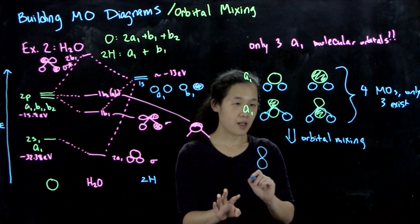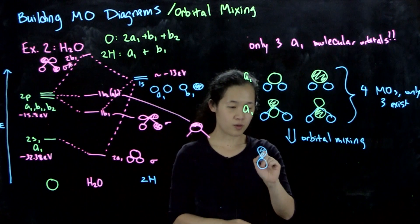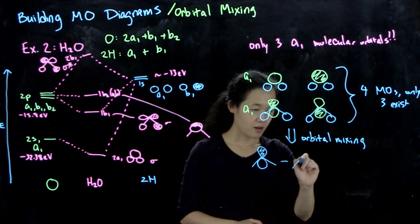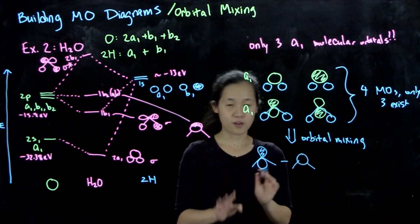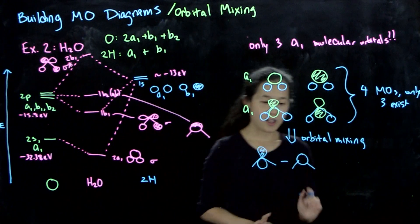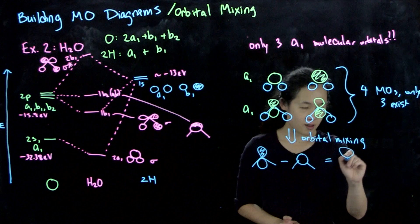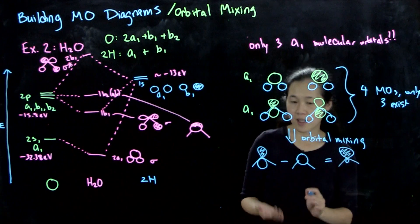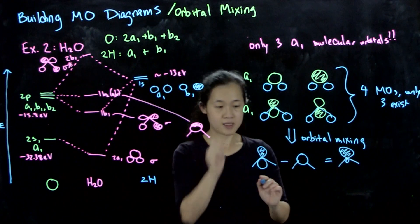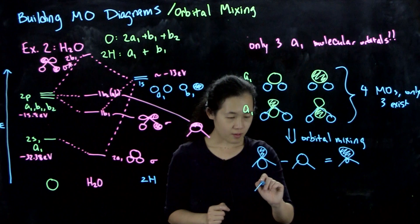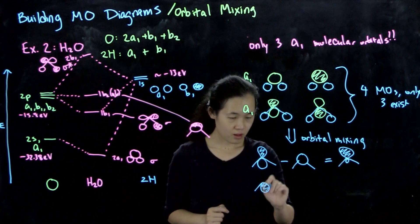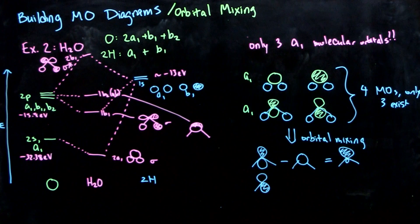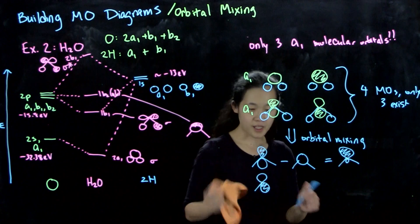The answer is that whatever will most stabilize the molecule once we start filling in electrons will be what we do for orbital mixing. The first orbital mixing we could do is: what if we take this orbital and subtract out this orbital? These are a1s - I'm not going to draw the hydrogens, but they are there. This would end up giving us something that looks like this.